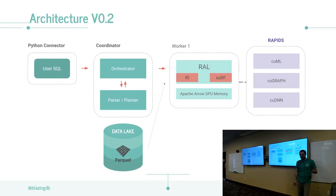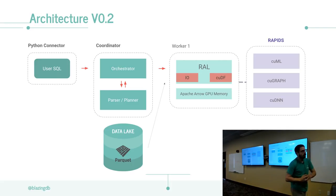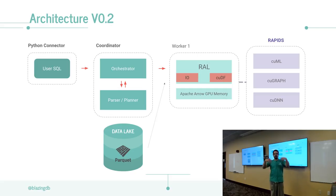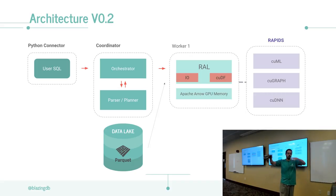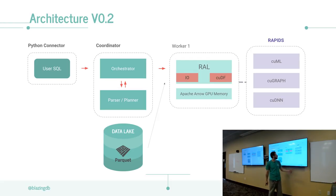That in a nutshell is what BlazingSQL is right now in its first iteration, except for IO. If you're using Tableau and want your query result, the RAL has a result set repository - a place where result sets are stored with a token associated with them. Whoever wants to retrieve that token can, over zero-copy IPC, TCP, and we're working on UCX. The idea is that the person consuming the result set is not necessarily the originator of the query - it can be somebody else.